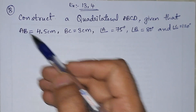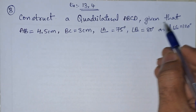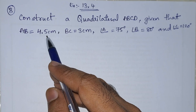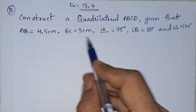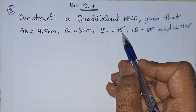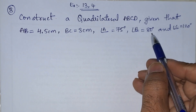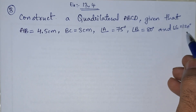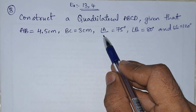Problem 3: Construct a quadrilateral ABCD given that AB equals 4.5 centimeters, BC equals 3 centimeters, angle A equals 75 degrees, angle B equals 80 degrees, and angle C equals 120 degrees.